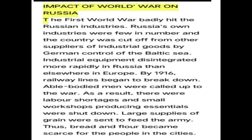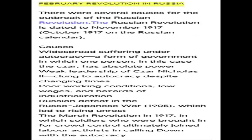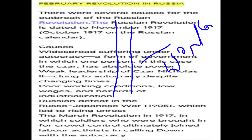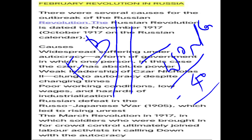Returning to the February Revolution: It was winter time, and the River Neva ran between two sides — workers on the right, fashionable buildings including the Winter Palace on the left. Workers lived under minus 40 degrees in abject poverty with deplorable conditions. They wanted to ask for justice.